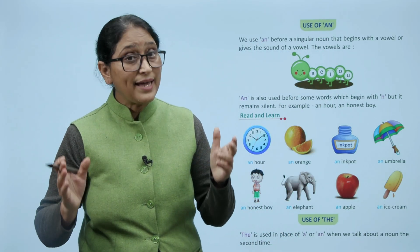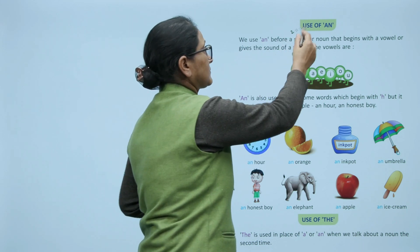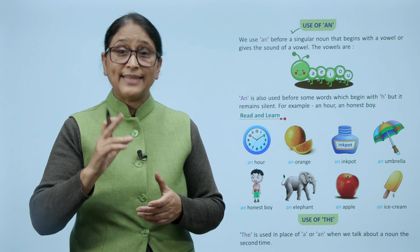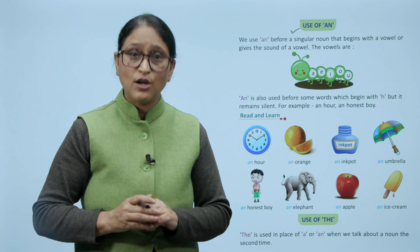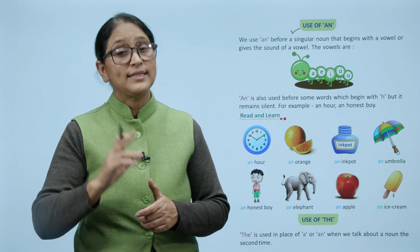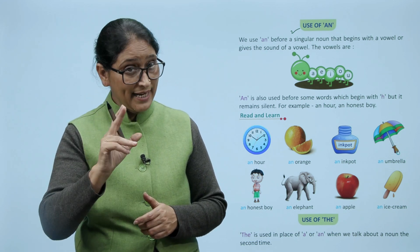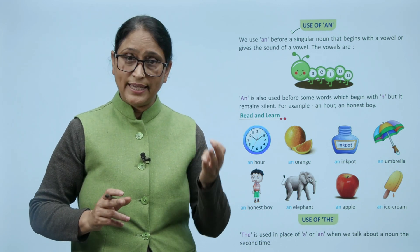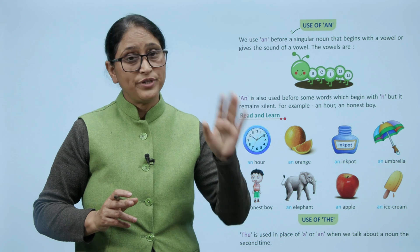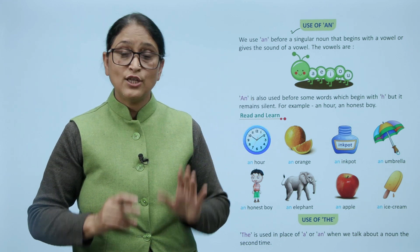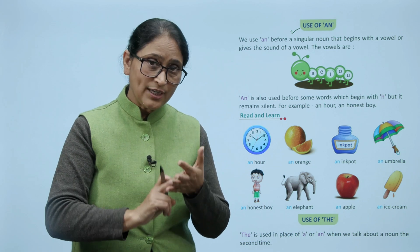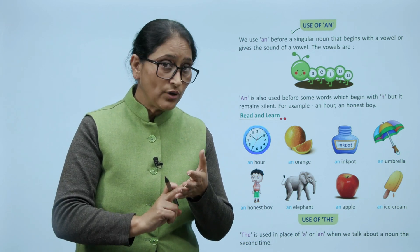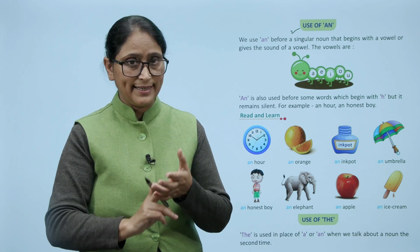Now use of an. We use an before a singular noun that begins with a vowel or gives the sound of a vowel. The vowels are a, e, i, o and u. Ye sab vowels hai. Toh hum an kahaan use karte hai? Jho vowel sound se pehle aur jho vowel letter hoon ga, ya toh vowel sound ae ga, jho vowel letter ae ga.